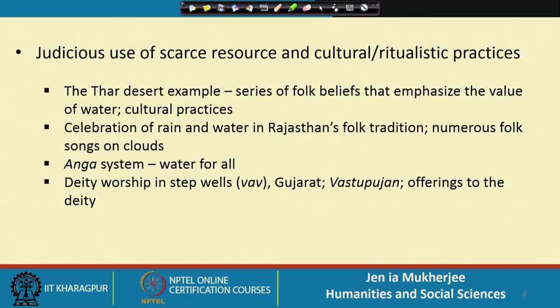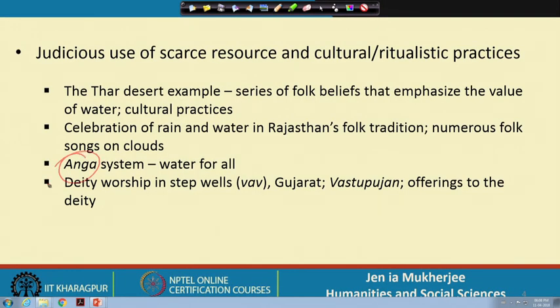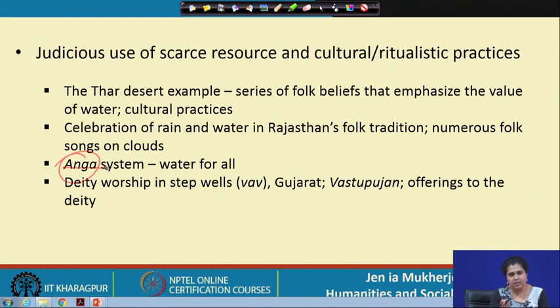There are very interesting cultural practices found in traditional folk beliefs, folk songs, folk literature, and stories. Rain and water are celebrated in Rajasthan's folk tradition — no other state in India has so many folk songs on clouds as Rajasthan. Apart from that, there is the Anga system — a system beyond anthropocentrism, extremely important for the egalitarian and equal distribution of water. Anga means a unit; per unit of water was measured for each household by mapping how many people, animals, and other animate beings were in it.